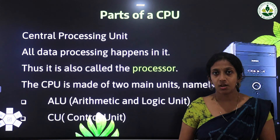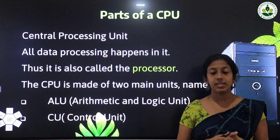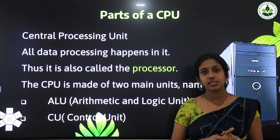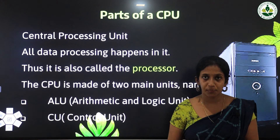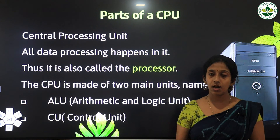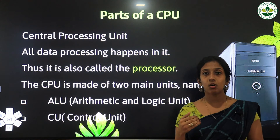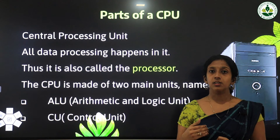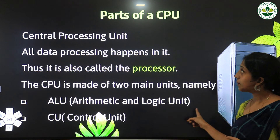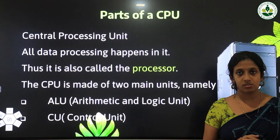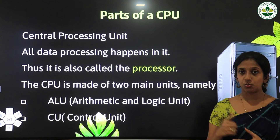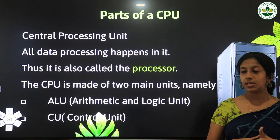We learned in the last class that a computer works on the basis of the IPO cycle — that means the input is given to the computer, the computer processes the data, and then it gives the output. All these processings are done by using the CPU, and CPU is known as the Central Processing Unit. All the data processing happens inside the CPU.